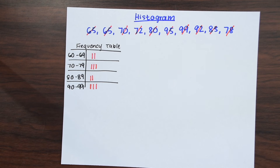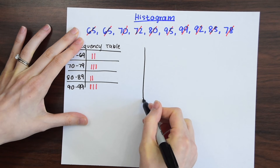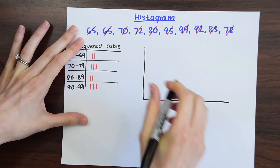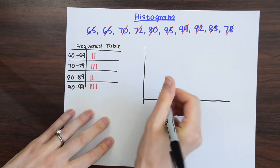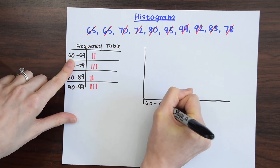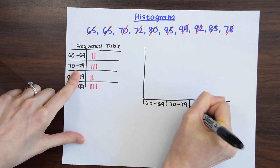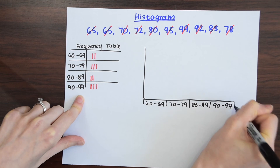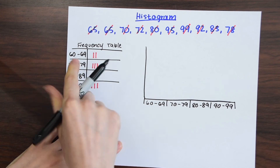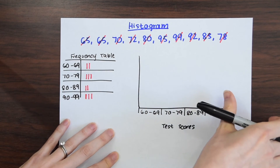Let's do the same thing — set up an X and Y axis. This time we're going to set up interval bins on the bottom and they're all going to be touching each other. So we have the same intervals: 60 to 69, 70 to 79, 80 to 89, and 90 to 99. Remember, these bottom numbers all represent test scores. And over here, this is going to be our frequency again.